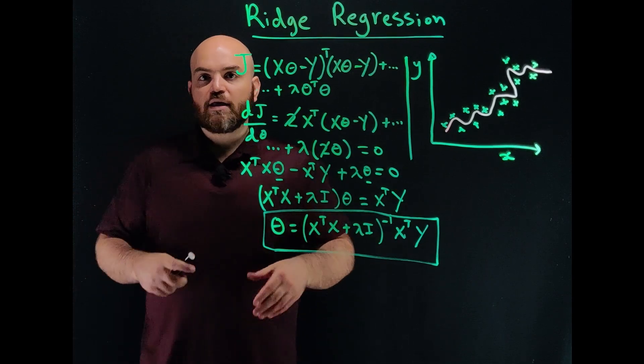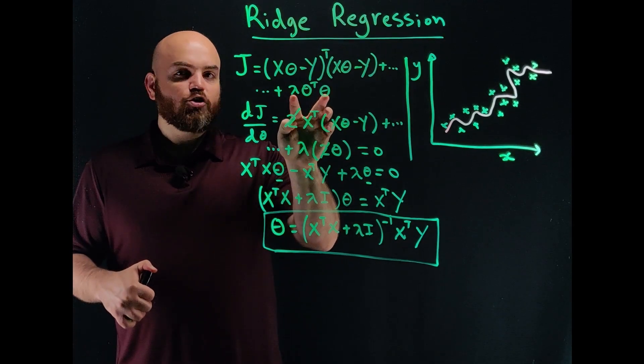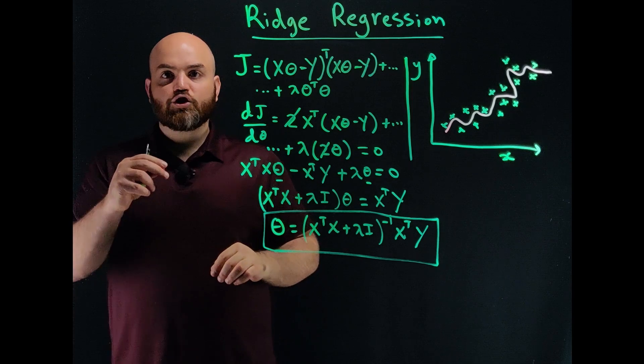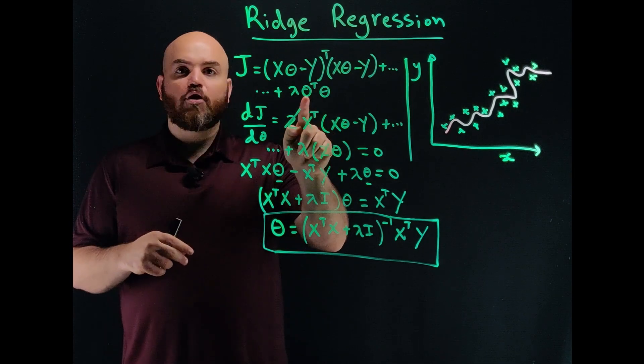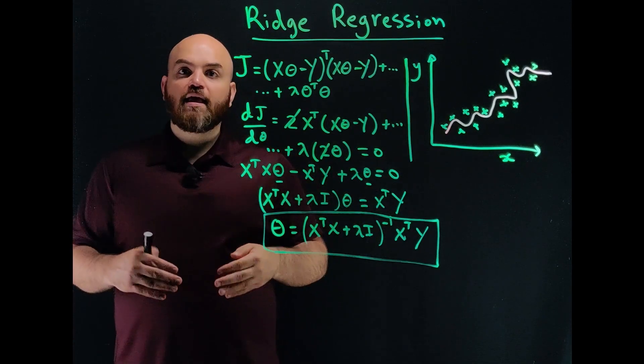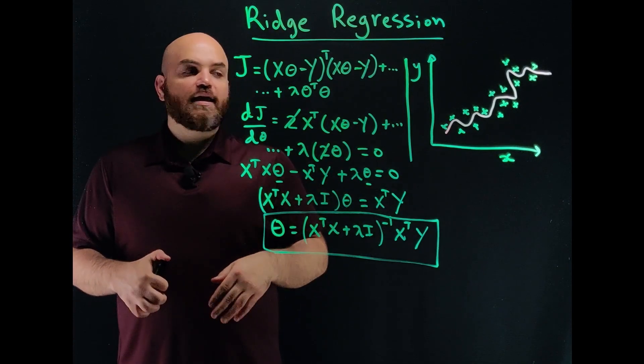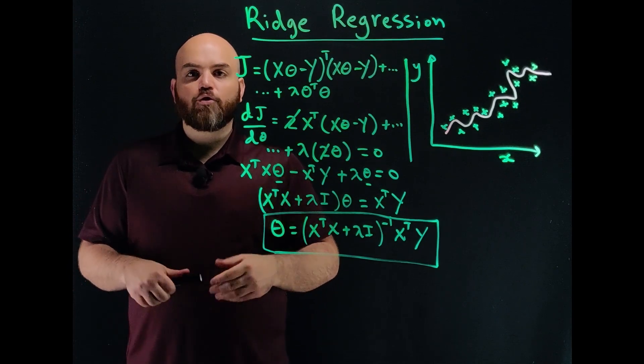So ridge regression is an ordinary least squares tacked on top of it a nice term right here that does the shrinkage or L2 regularization of the weights or of the parameters of my model. That way I don't overfit to the data, and I get a nice model that can generalize in a good way. And obviously the more data you have, the more you'll generalize.